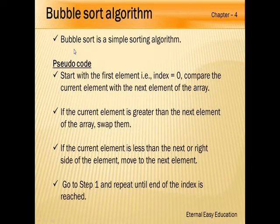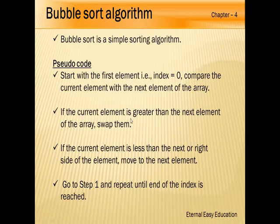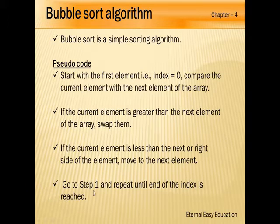What is the pseudo-code for bubble sorting? Start with the first element at index 0. Compare the current element with the next element of the array. If the current element is greater than the next element, swap. If the current element is less, move to the next element. Go to step 1 and repeat until the end of the index is reached.